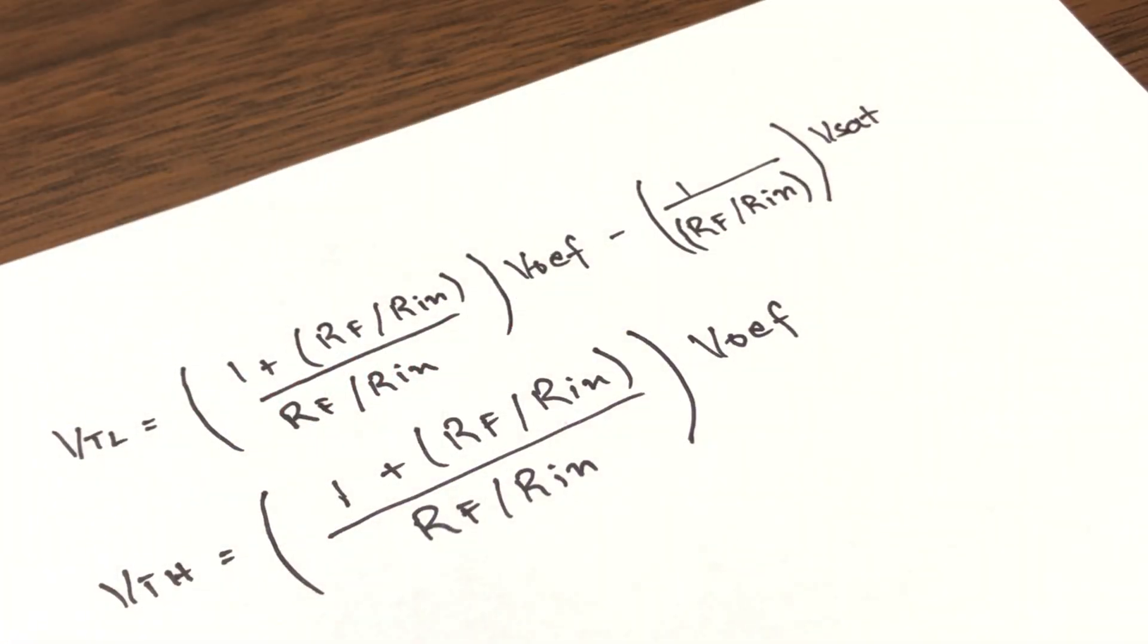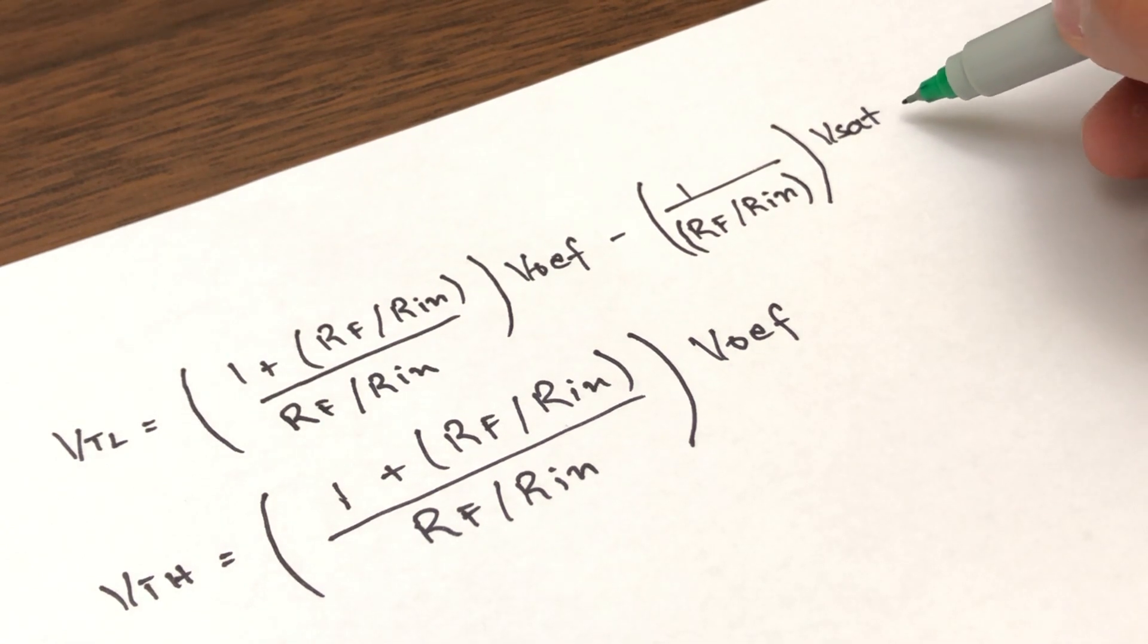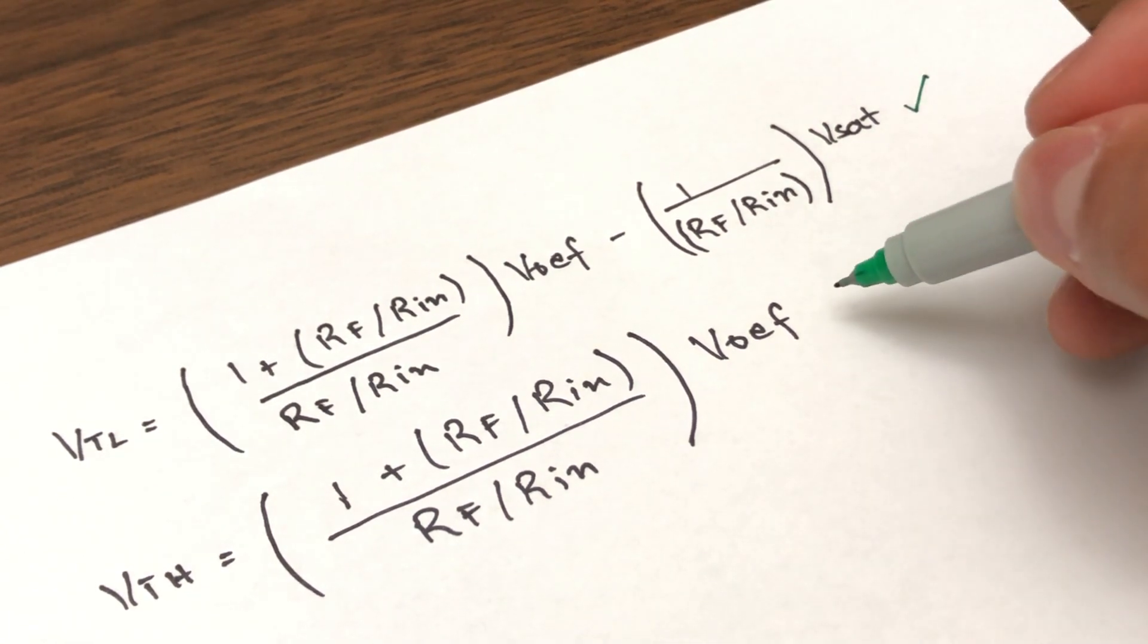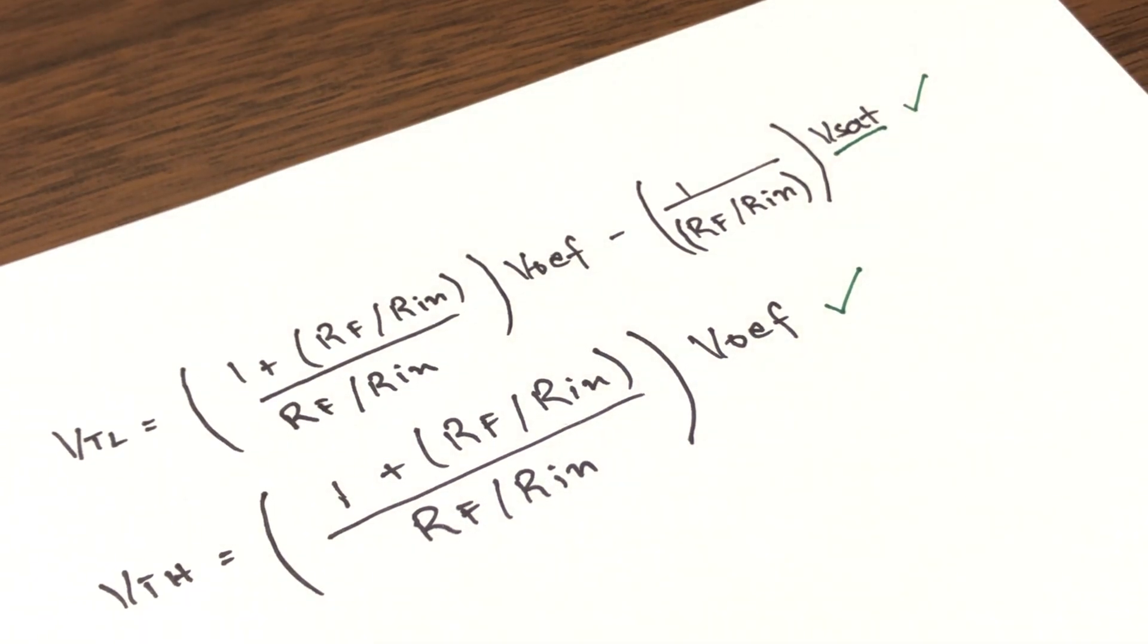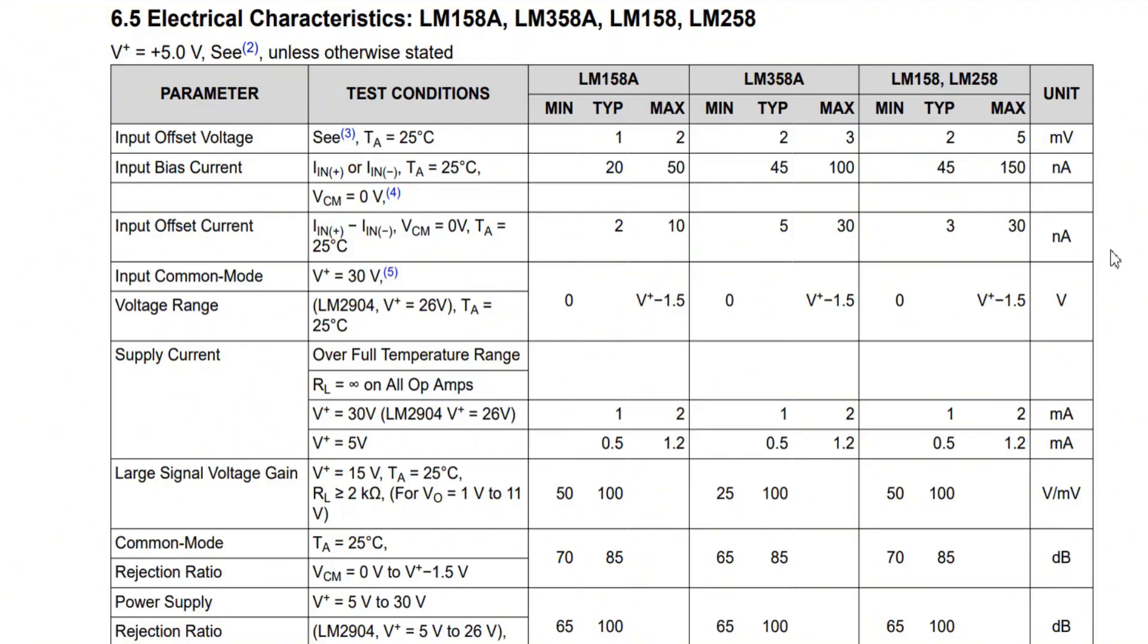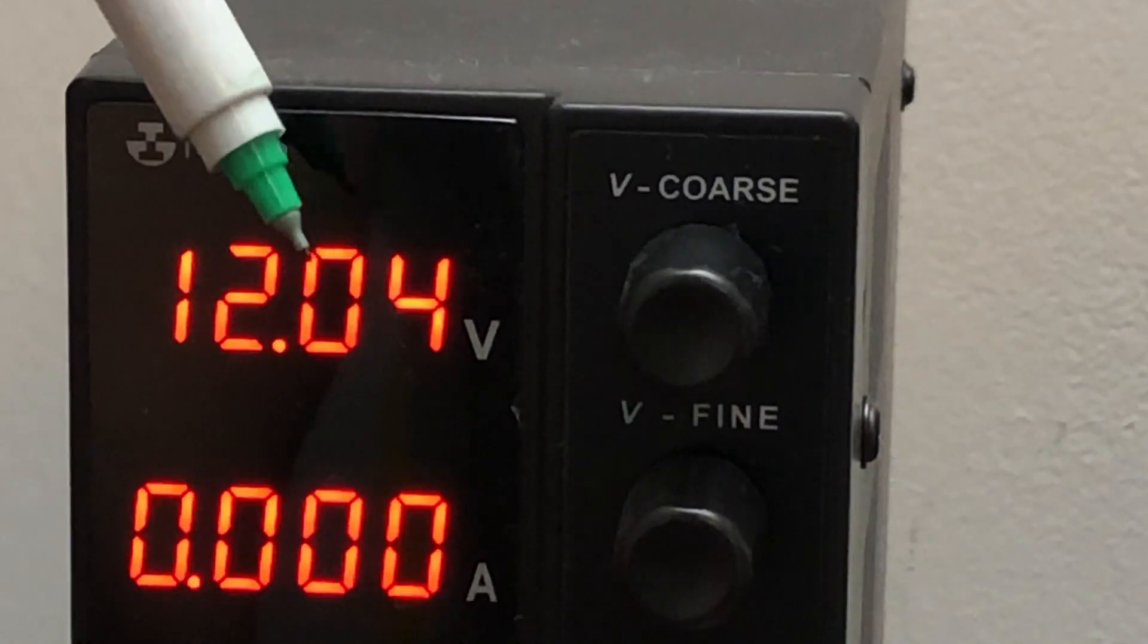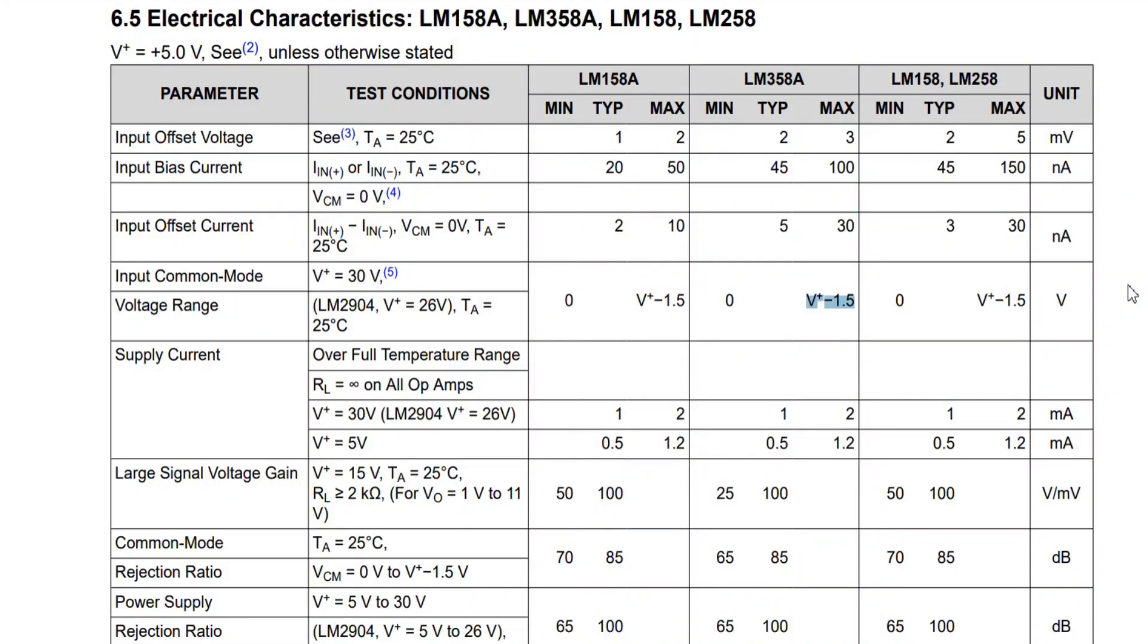The formula to calculate the upper and the lower threshold is pretty simple. The lower threshold can be determined by using this formula. And the upper threshold can be determined by using this formula. Here, Vset is the confusing bit. Basically, it's the maximum output voltage of an op-amp. In my case, I am using a LM358 op-amp. So, if we look in the datasheet of this op-amp, as you can see, it's the input voltage minus 1.5 volts. So, if you for example use a rail-to-rail op-amp, this difference would be in millivolts. I am powering the op-amp with 12 volts. So, I'll be getting around 10.5 volts output from the op-amp. This is known as the saturation voltage of an op-amp.